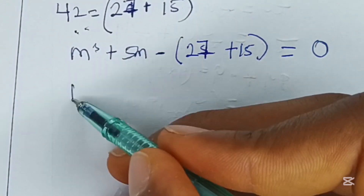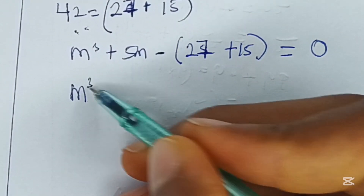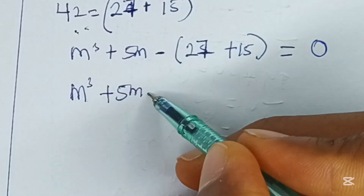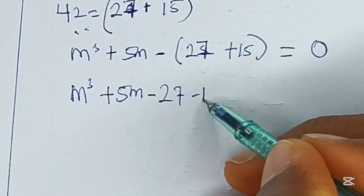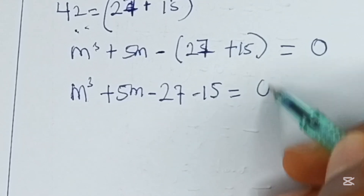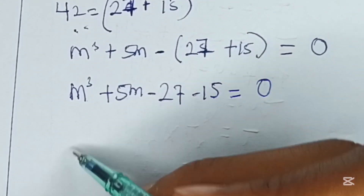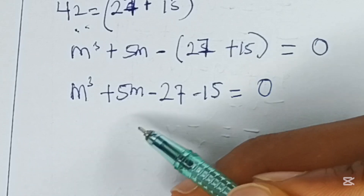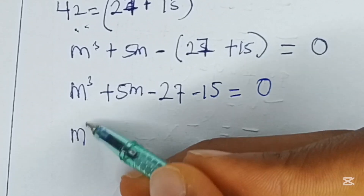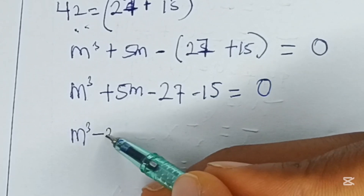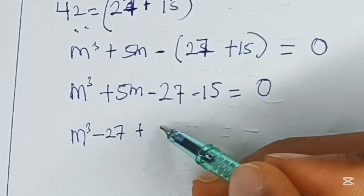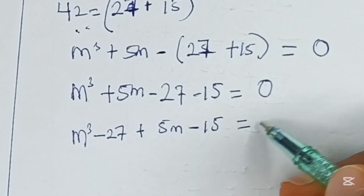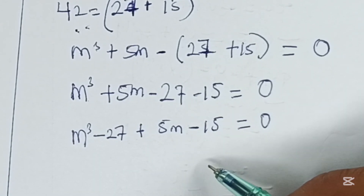Opening up these brackets, we have m cubed plus 5m minus 27 minus 15 is equal to 0. So from here now, we can rearrange this to be m cubed minus 27 plus 5m minus 15 is equal to 0.